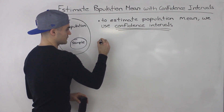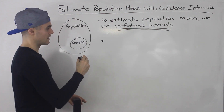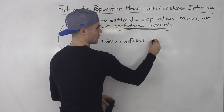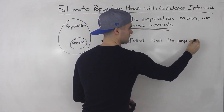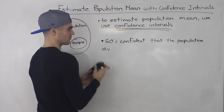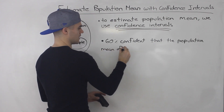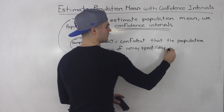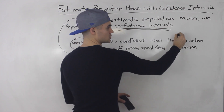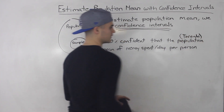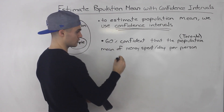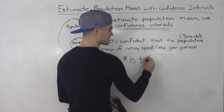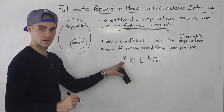To start off explaining confidence intervals, I'm going to make a statement here. Let's say that I can be 60% confident that the population mean of money spent on food per day per person in the population — remember we're looking at Toronto as an example — is going to be $10 plus or minus $2. So this here is a confidence interval.